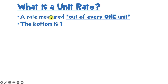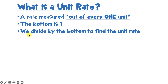Now that we know what it is and we know something about how it looks, the next thing we need to ask is how exactly do we find a unit rate? We divide by the bottom to find the unit rate. And so far all we've had is words, and math is one of those things that's a lot easier to learn from example. So let's go to our first one.